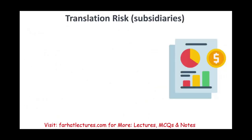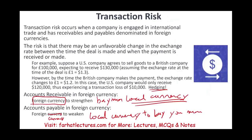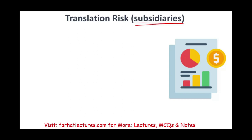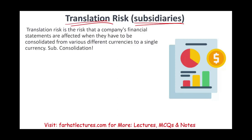Translation risk is related to exchange risk, but it exists when you operate overseas and have subsidiaries. Exchange risk is about buying and selling — import, export. Translation risk is when you have operations in Europe or Asia and you have to translate your financial statements. You take the financial statements prepared in euros and translate them into US dollars. Translation risk is the risk that a company's financial statements are affected when consolidating from various different currencies into a single home currency, like the US dollar.